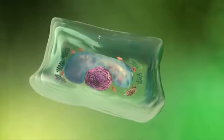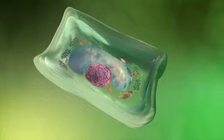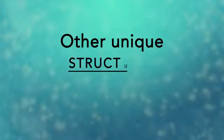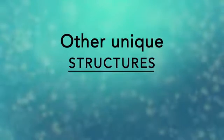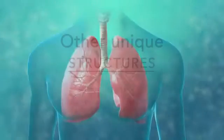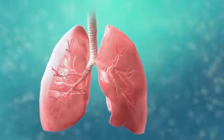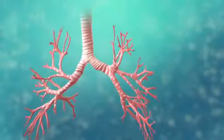There are many other unique structures that only some cells have. Here are just a few. In humans, for example, the respiratory tract is lined with cells that have cilia. These are microscopic, hair-like projections that can move in waves. This feature helps trap inhaled particles in the air and expels them when you cough.